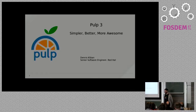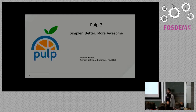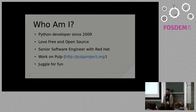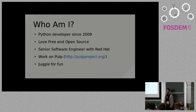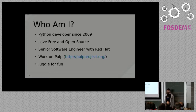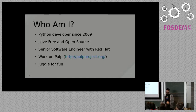Thank you everyone for being here today. I know there are a lot of great talks out there so I'm really glad you chose to attend this one. My name is Dennis Kleban and I'm here to tell you why Pulp 3 is going to be simpler, better, and more awesome. I'm primarily a Python developer since about 2009, employed by Red Hat. My primary responsibilities are contributing to Pulp, and in my free time I like to juggle — I have six balls in my bag.